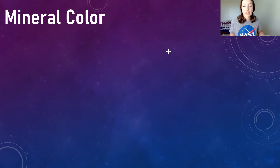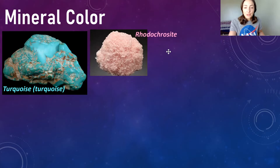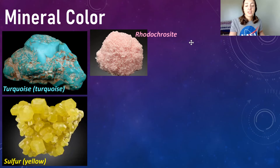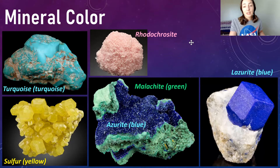However, certain minerals can be distinguished very easily using color. For example, turquoise is turquoise in color, rhodochrosite is always pinkish-reddish, sulfur is always yellow, malachite is always green, azurite is blue, and lazurite is also blue in color.